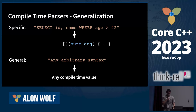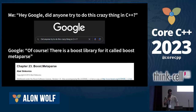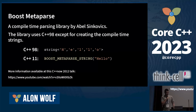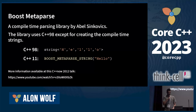We need to start from the beginning, which in my case was a Google search. I tried to search whether anyone had tried to do this crazy thing in C++. And of course, there was already a Boost library for it. This leads us to the first library of today. BoostMetaParse is a compile time parsing library by Abel Sinkovic. The library uses C++98 for everything except for creating compile time strings. In C++98 we have to write each character separated by a comma, and in C++11 we can use the BoostMetaParseString macro.